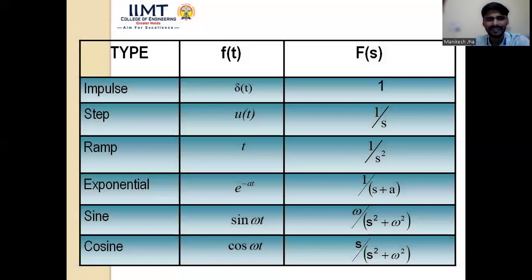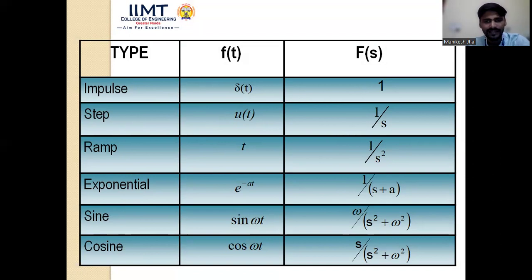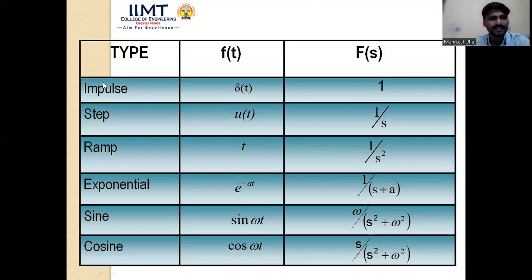There are basic signals whose Laplace transforms we need to remember: impulse signal, step signal, ramp signal, exponential signal, sine signal, and cosine signal. We remember these because when solving Laplace transform problems, these functions appear at intermediate steps. Knowing their Laplace transforms allows us to apply them directly without re-deriving each time.